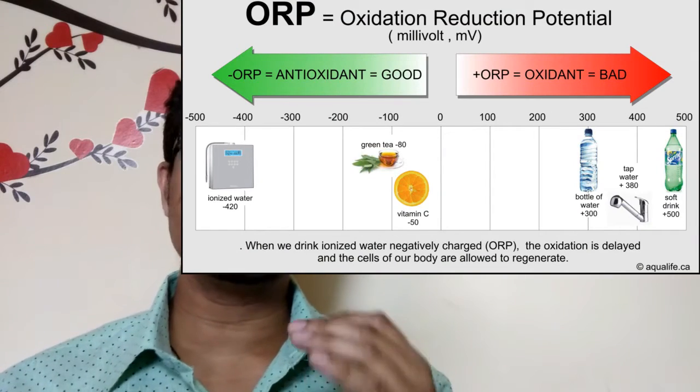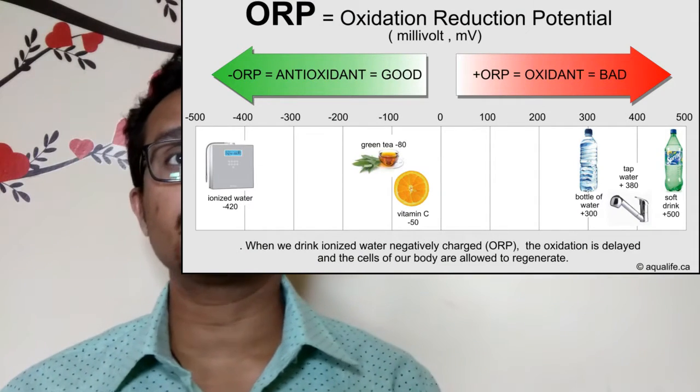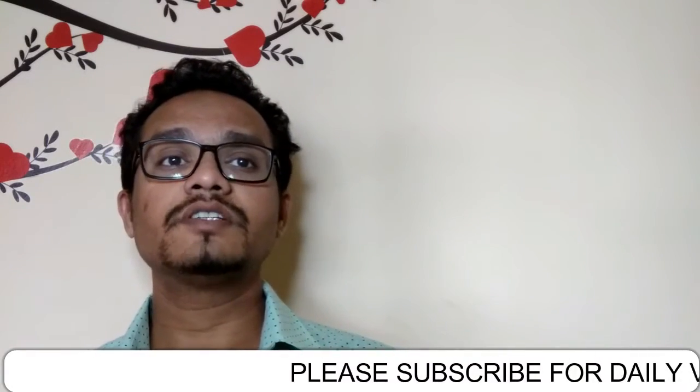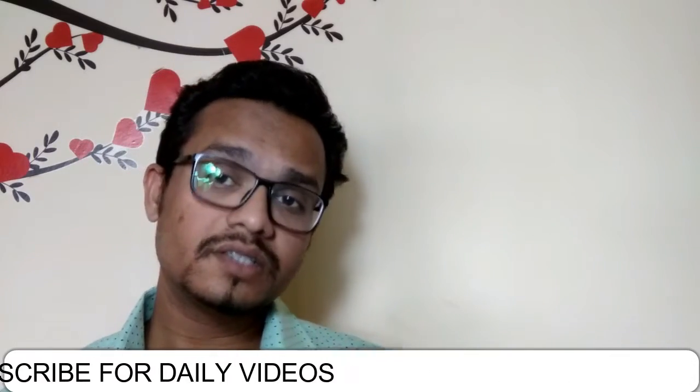What does an alkalinizer do to the water? It uses a simple technology that changes the ORP of the water. ORP stands for Oxidation Reduction Potential and is directly linked to the electrical charges of the water. Substances that are positively charged are acidic, while substances that are negatively charged are alkaline. The ionizer charges your water with a negative charge, giving you a lower, negative ORP.